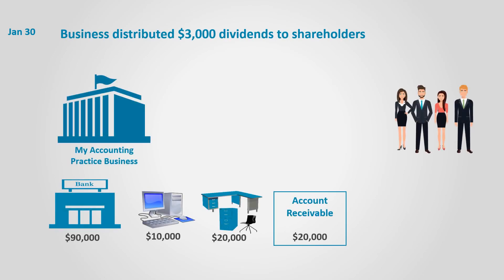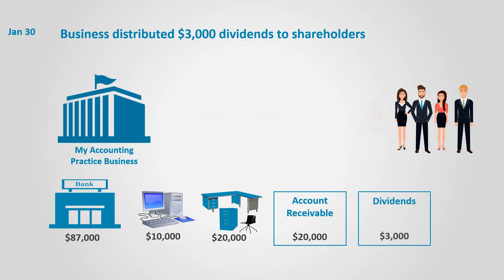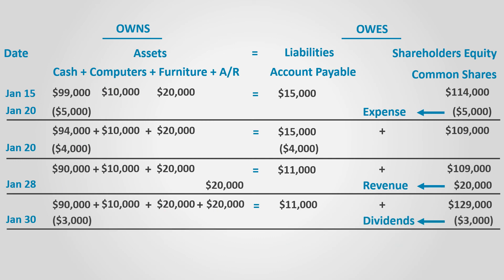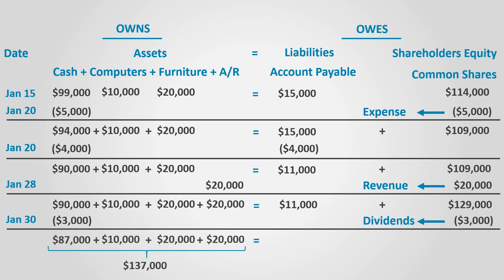On January 30th, the business distributed $3,000 of dividends. Note that this is just an assumption for the sake of this example — dividends are usually distributed towards the end of the period on an annual basis. Assets decrease by $3,000 in the form of cash, and total assets decrease to $137,000. This eventually decreases the amount left to shareholders' equity by $3,000. We can deduce that dividends decrease shareholders' equity.